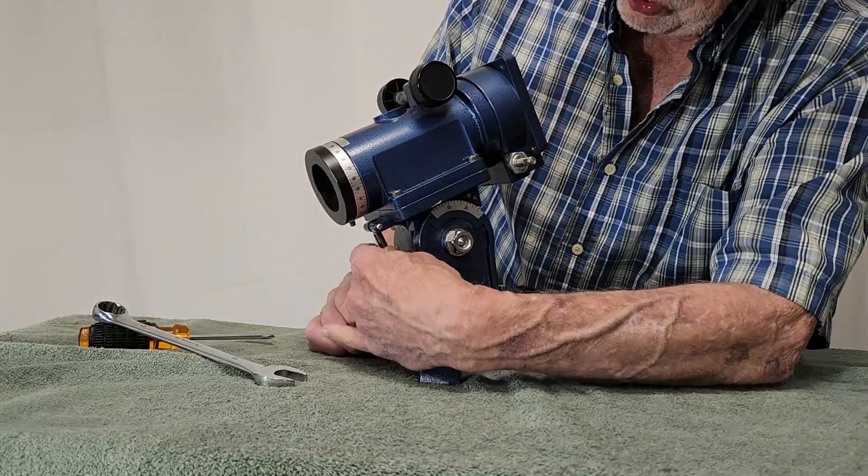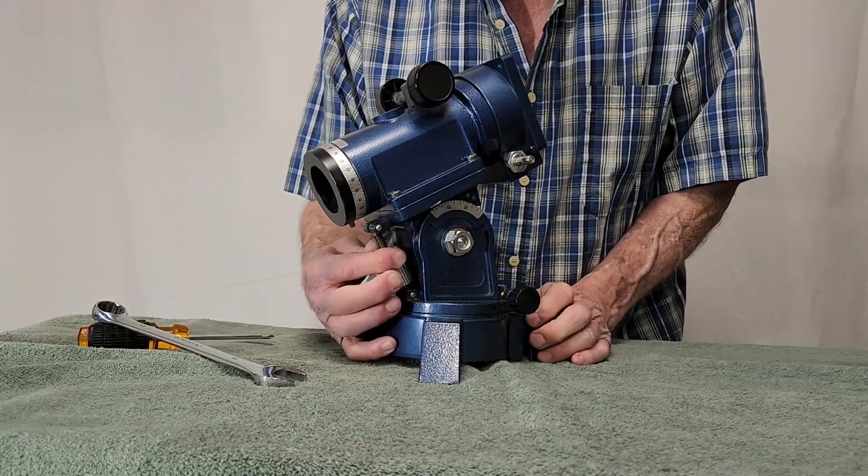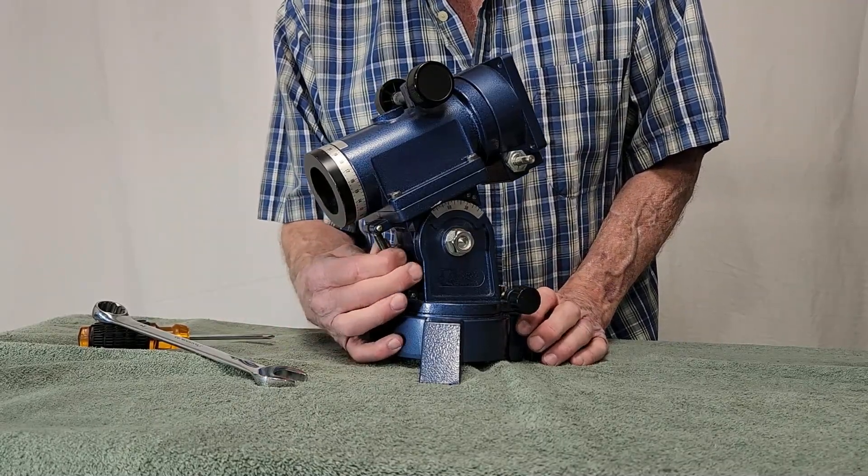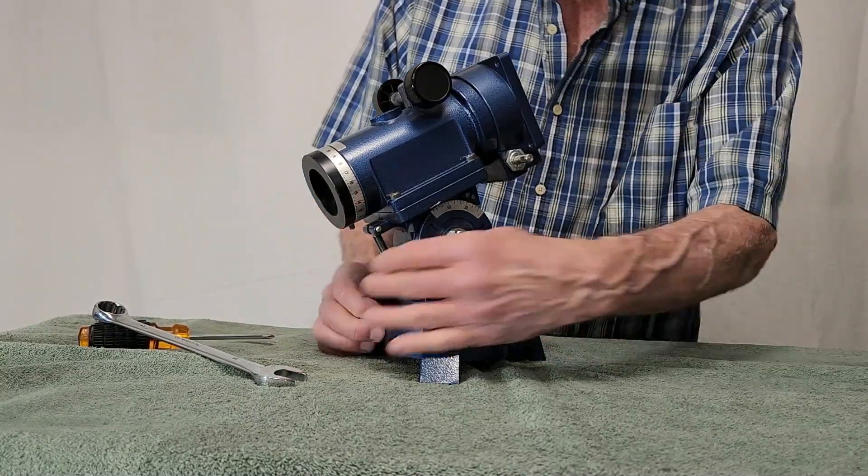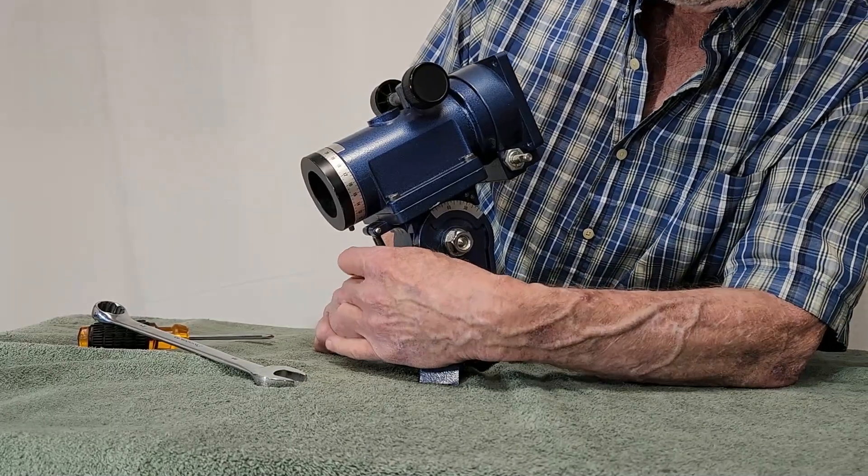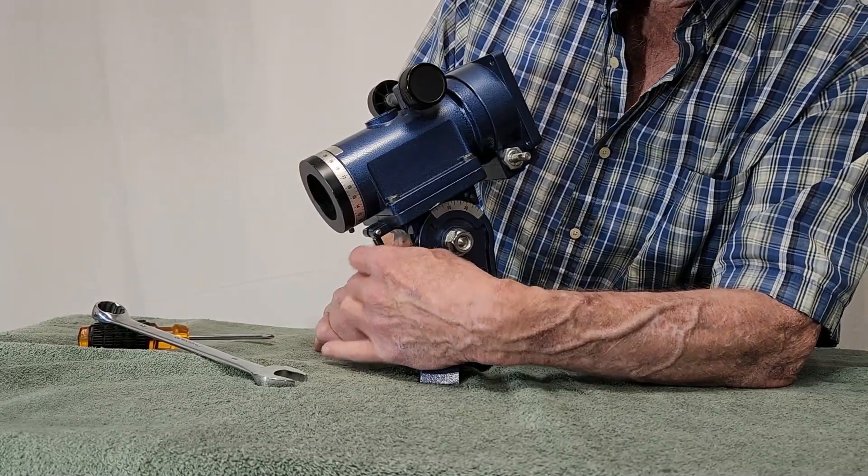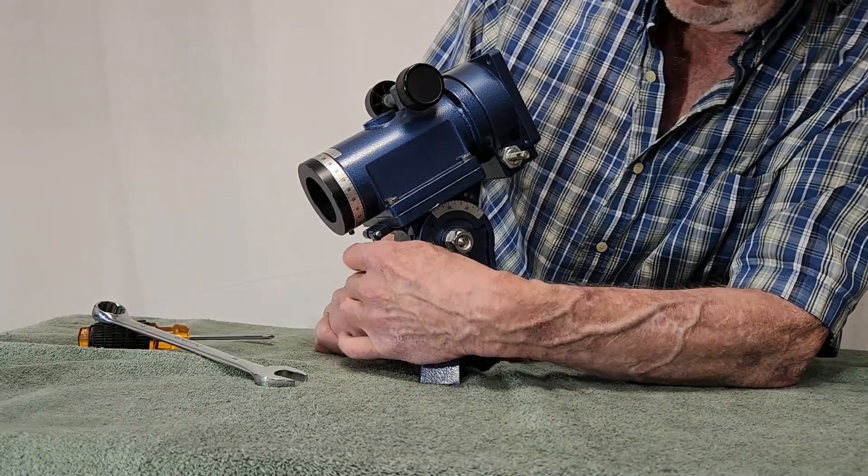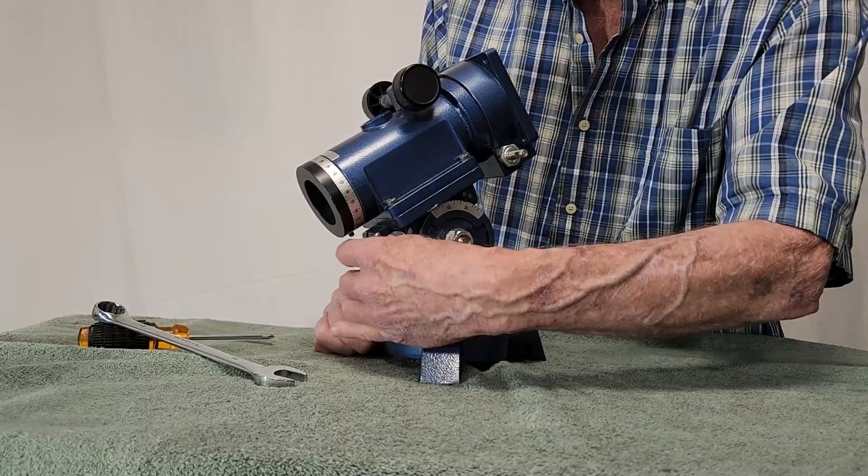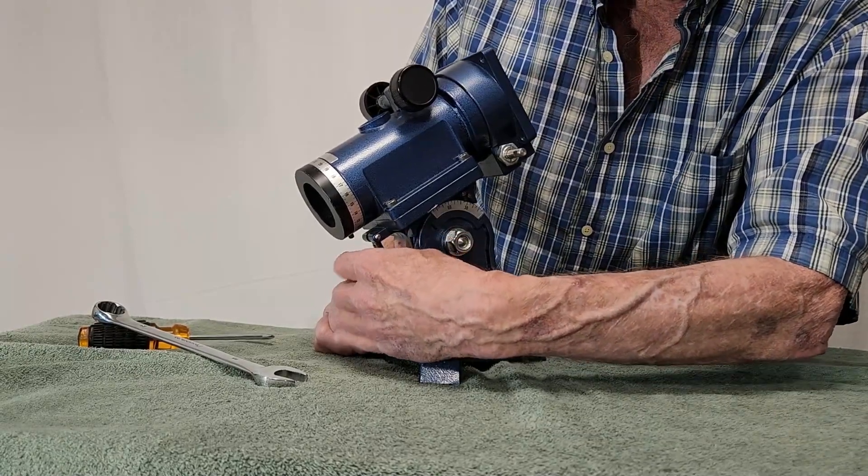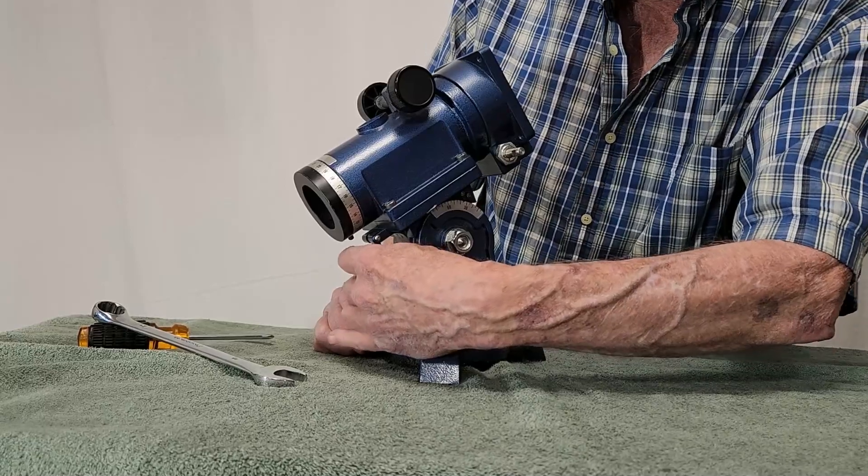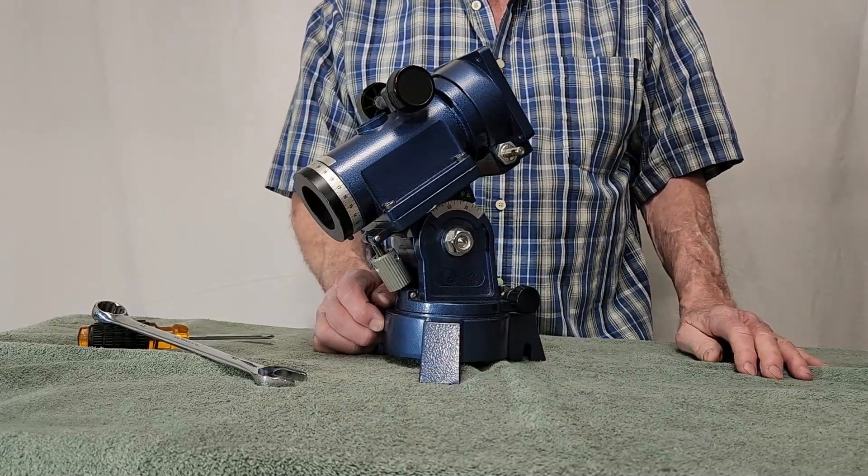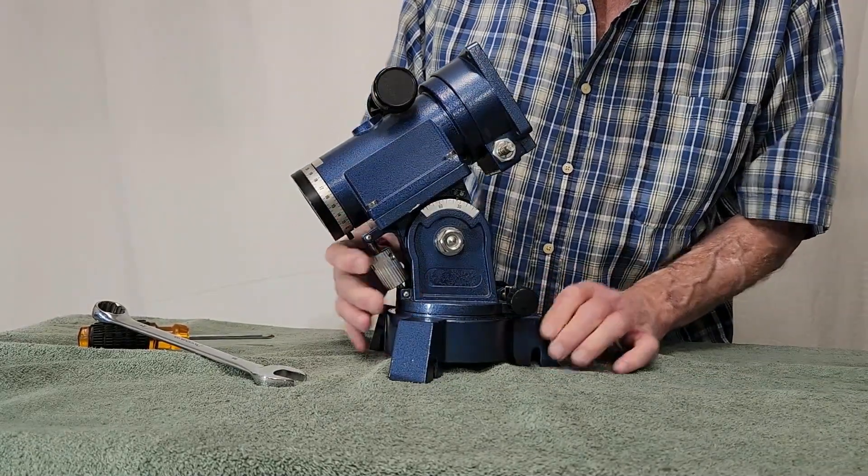It won't give you the precision that you may want. Especially, you know, this has got a polar scope in it. You want to be able to align this very nicely. And this mechanism allows you to do that. It's a very large latitude range. It will cover maybe 90% or 80% of the people in the world will be covered on those latitudes. I just wanted to show you that limitation.